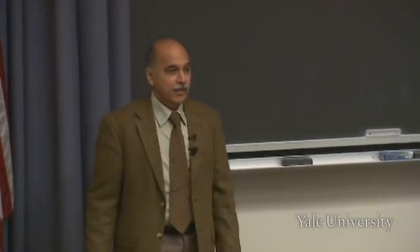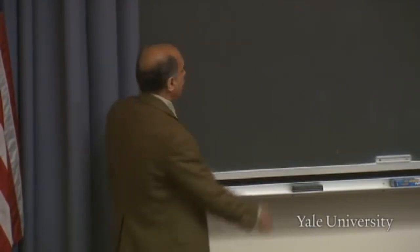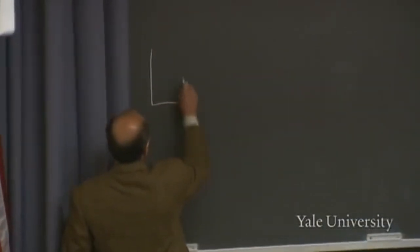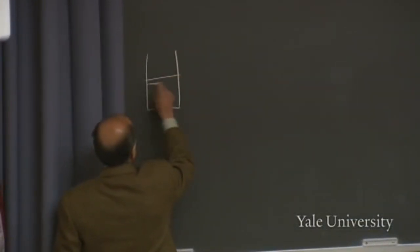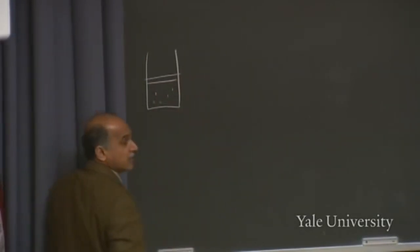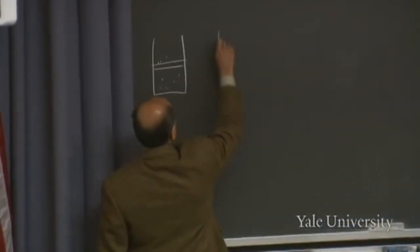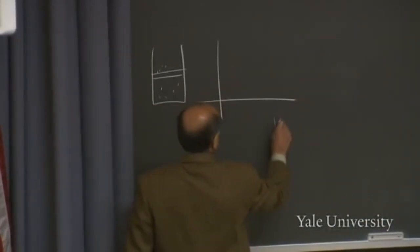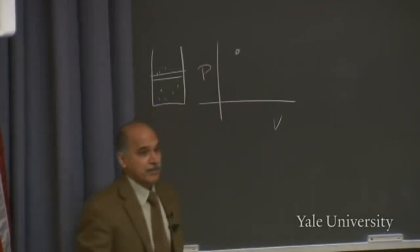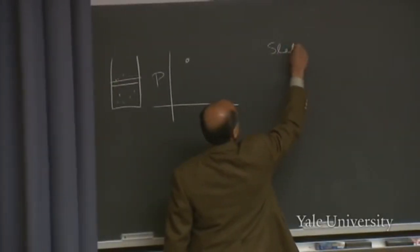We're going to study a thermodynamic system. For all our purposes you can imagine that to be some amount of ideal gas trapped inside this piston and cylinder combination. The gas has a certain pressure and a certain volume, and we represent that by a point in this diagram. That defines the state—that's called the state of the gas.